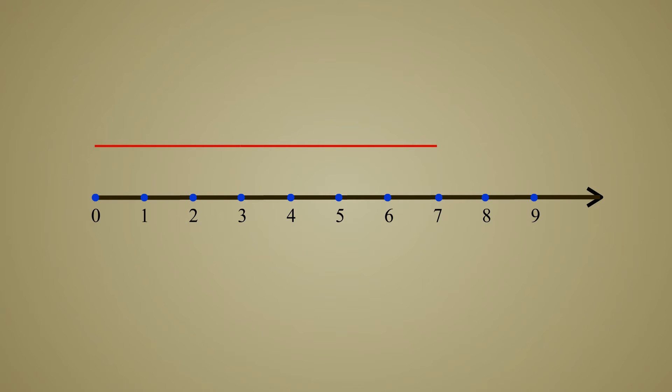Likewise, if we subtract a distance of four units from a distance of seven units we get a distance of three units.